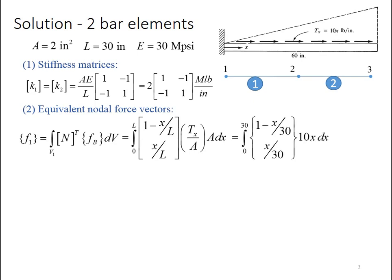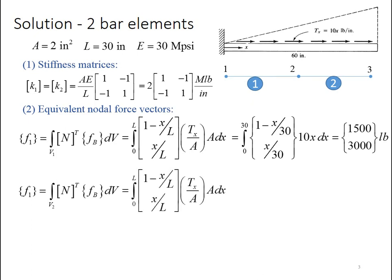So I'm plugging in L equal to 30 and the tx term being 10x. I need to multiply things out and then solve the integral. But I end up with 1,500 pounds acting at node 1 and 3,000 pounds acting at node 2 for element 1. Moving on to element 2, then I'm going to integrate over volume 2 with the shape functions and the body force vector. So the terms look similar.